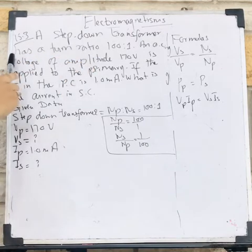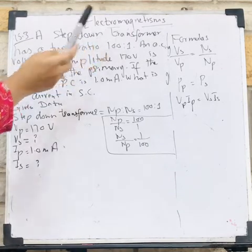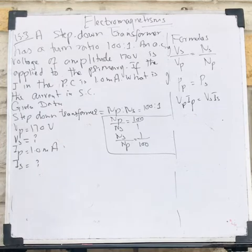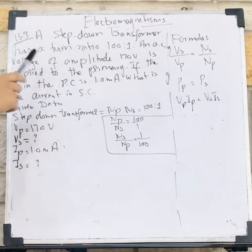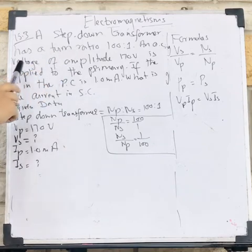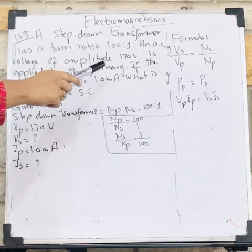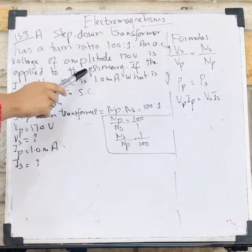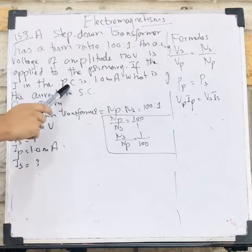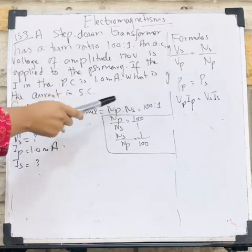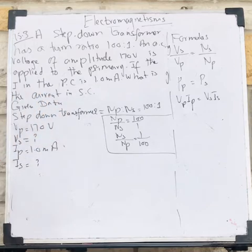A step-down transformer has a turn ratio 100 to 1. It means I have Ns ratio Np ratio Ns. And an AC voltage of amplitude 170V is applied to the primary. If the current in the primary coil is 1.0 milliampere, what is the current in the secondary? So let's find out the given data from this statement.